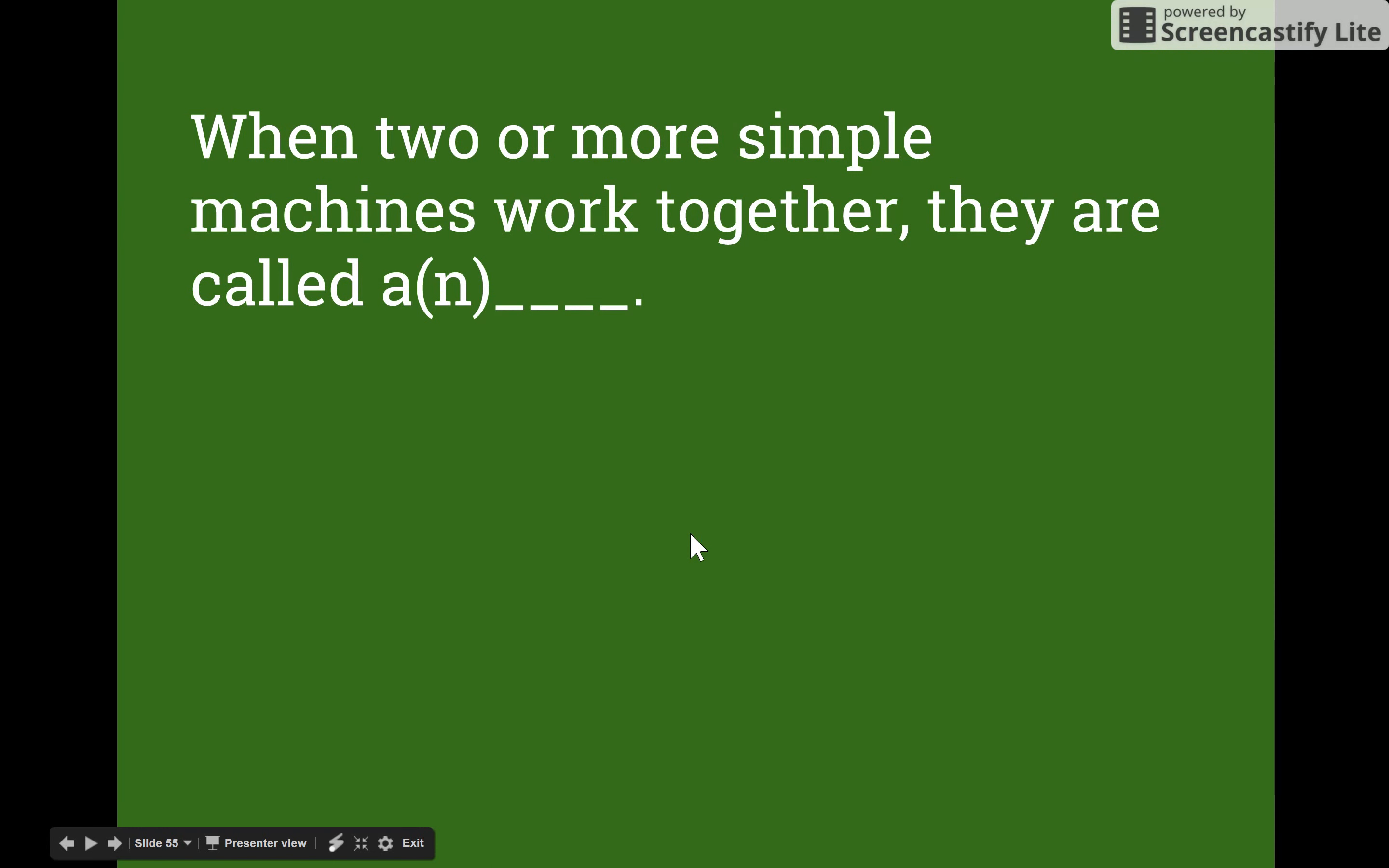When two or more simple machines work together they are called a compound machine. Things like sewing machines and bicycles, blenders, stuff like that. Compound machines.